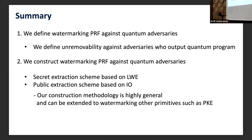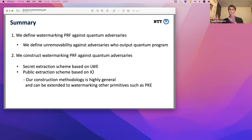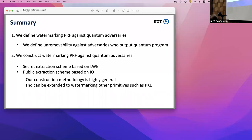Thank you. Are there any questions? One question: if the adversary outputs a classical program, does your notion collapse to the known classical notion, or are there still differences? Yes, exactly — our notion is strictly stronger. If we restrict attention to adversaries that only output classical programs, our definition implies classical watermarking PRF. Is it potentially stronger in the sense that if you have a classical program satisfying the old definition, do you still satisfy your new definition? Yes, exactly. No further questions, so let's thank the speaker again.